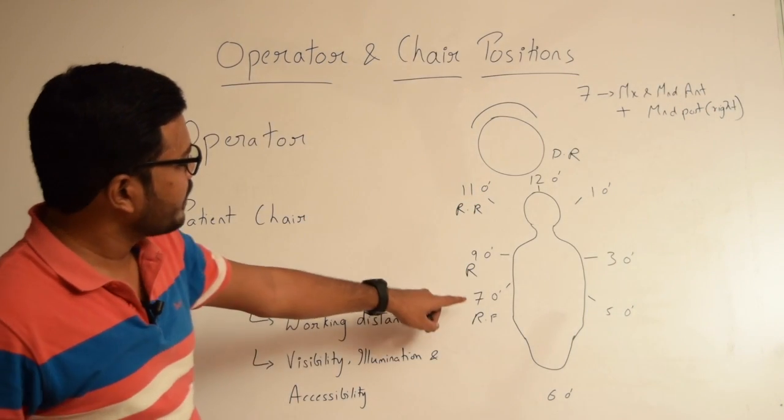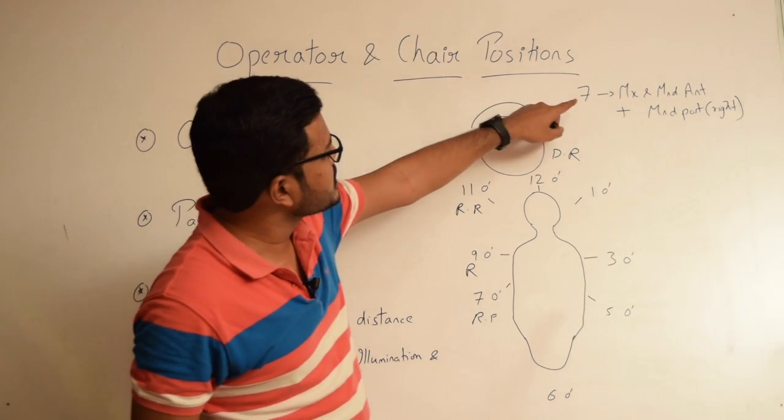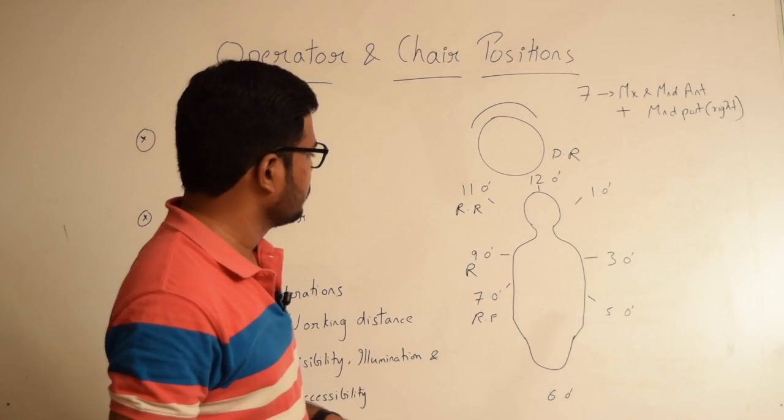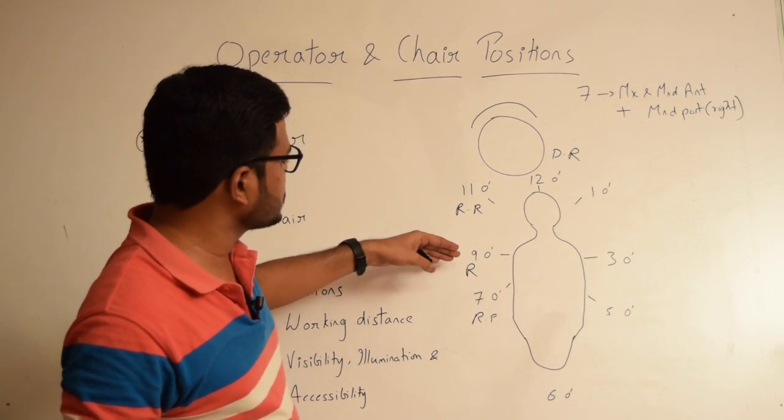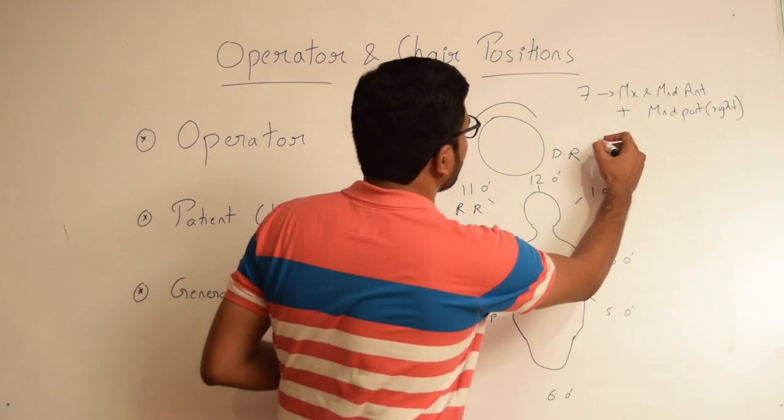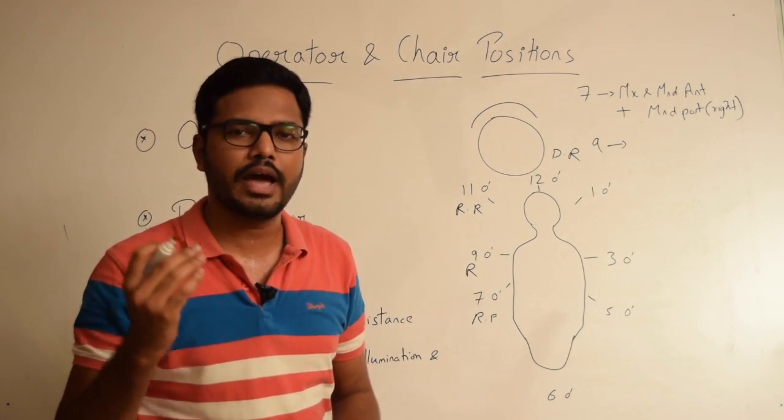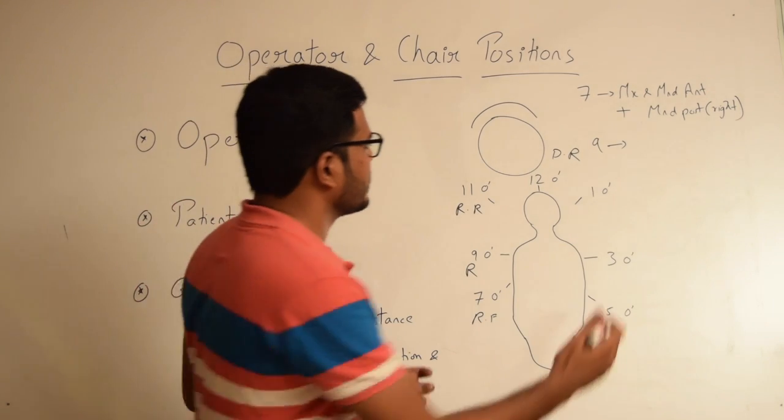Right front position or 9 o'clock position is mainly used for operating upon the facial surfaces of maxillary and mandibular posterior teeth.